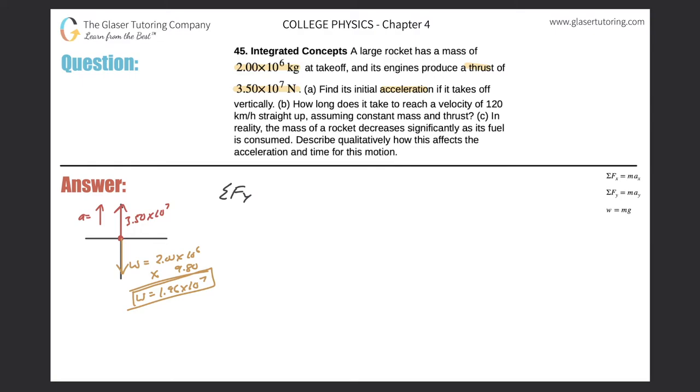So the sum of the forces in the y direction is equal to the mass times the acceleration in the y direction. The sum of the forces: we have a positive 3.50 times 10 to the 7th, minus 1.96 times 10 to the 7th pointing down. That should equal the mass of the rocket, which is 2.00 times 10 to the 6, multiplied by the acceleration.